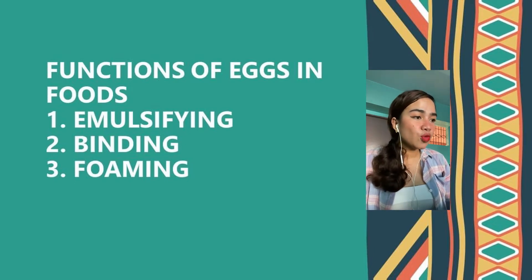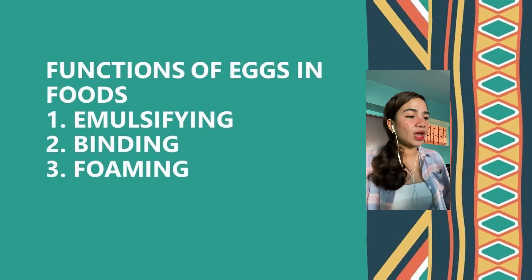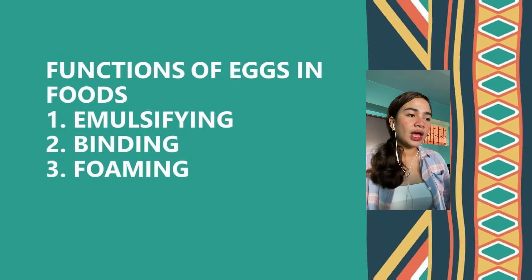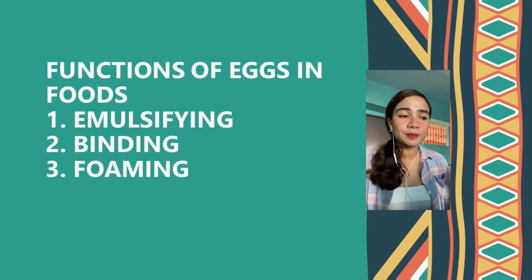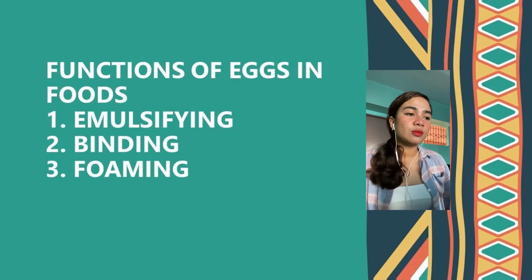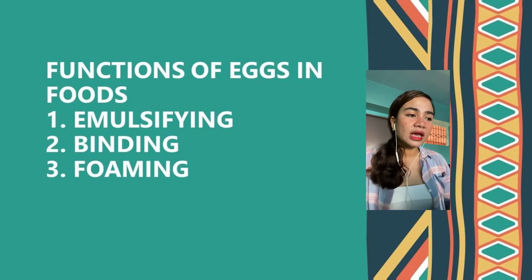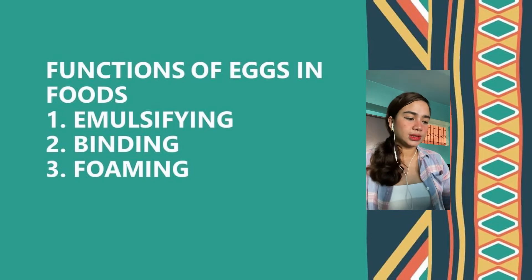Next we have foaming. The capacity of egg whites to be beaten into a foam that increases to six or eight times its original volume is invaluable in food preparation. Egg white foams are used to aerate and leaven a number of food products such as puffy omelets, soufflés, angel food cake, sponge cake, and meringues.